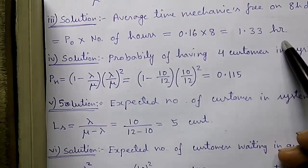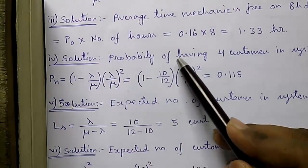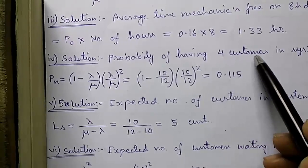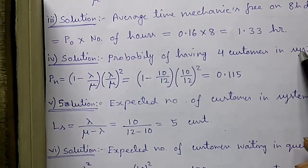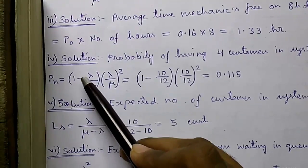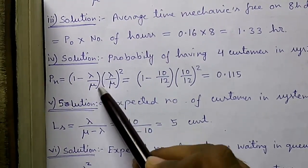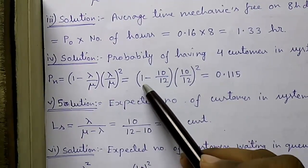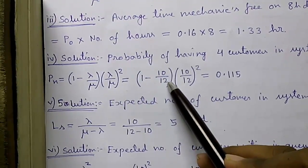The mechanic is free out of 8-hour schedule. Solution of four: probability of having four customers in the system or in the garage is given by Pn equals (1 minus lambda by mu) times (lambda by mu) to the power n. So that equals (1 minus 10 by 12) into (10 by 12) to the power 4, which equals 0.115.